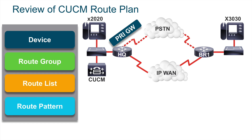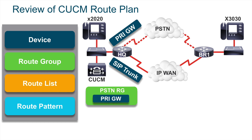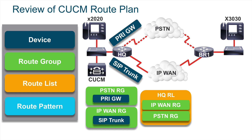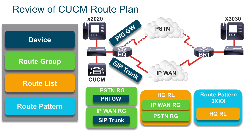I've got a couple of devices: one gateway that gets me out to the PSTN and a trunk that gets me out to the IP-WAN. I can put those different devices in their own route group — one route group for the PSTN and one for the IP-WAN. Then I create a route list that includes both groups, with the WAN listed first since I prefer it. Then I create a route pattern: if I want to reach a four-digit number beginning with a three — 3XXX — I go to this route list, which picks a route group, which picks a device. That's the traditional way of setting up a route plan in Cisco Unified Communications Manager.